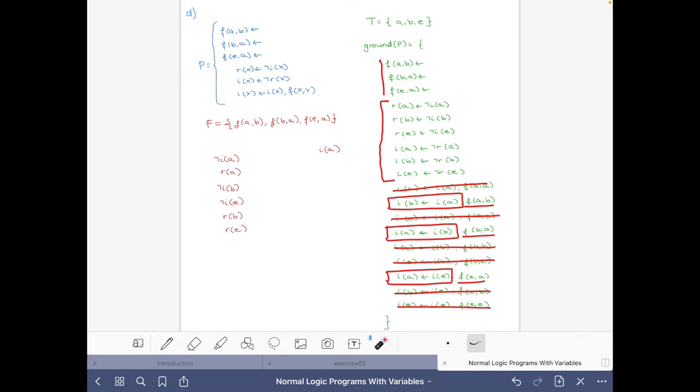So then here we have a possible stable model with I(a), I(b), and I(e), and of course these facts, but now I'm not taking care about them anymore because we know they will belong to any answer set. So let's do the reduct, and basically since we have A, B, E, this disappears and this disappears. So we have these three facts that give us R(a), R(b), R(e), and this is exactly what we have, so then this is a stable model of the program.